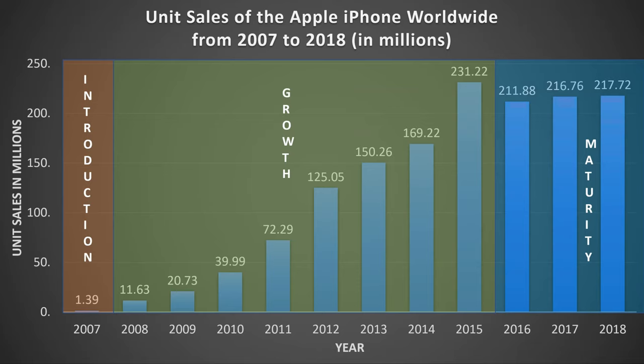Sales in 2016 to 2018 have actually plateaued, a clear indicator that the iPhone is currently in the maturity stage. So the question is: after a very strong first decade, what's left for the Apple iPhone? Will the product remain in the maturity stage for the next decade, or will Apple actually innovate a brand new concept which will cause the iPhone to enter the decline stage, just like the iPhone did to the iPod?